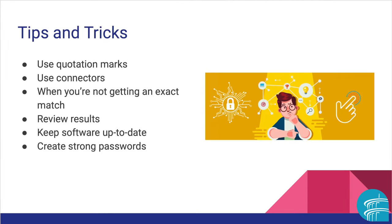Here are some tips and tricks to use while you search online. Use quotation marks around a phrase to limit results to the terms inside the quotation marks. Use connector words like AND and OR between keywords to broaden or narrow your search. For example, you can search Chicago AND events, or you can search Chicago AND events OR museums.